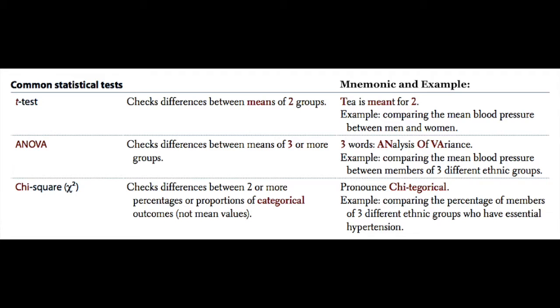The next one is Chi-square. The mnemonic here is a stretch, but if you try to say categorical as 'chi-tigorical', then you can remember that Chi-square checks the differences between two or more percentages or proportions of categorical outputs.